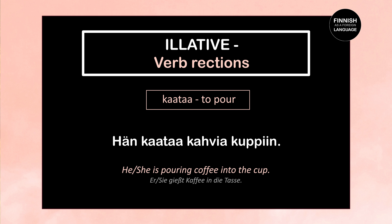Next verb: kaataa, meaning to pour. Hän kaataa kahvia kuppiin — he or she is pouring coffee into the cup. Hän kaataa is the third person singular present tense of kaataa. Kahvia is the partitive of kahvi — we use partitive for an indefinite amount. Kuppiin is the illative of kuppi, meaning cup. We think: where does he pour something in? Into the cup.